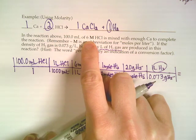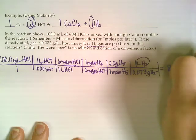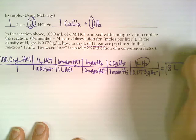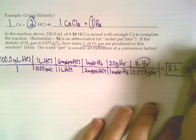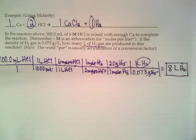Because that molarity that it gave us was kind of crummy, only had one sig fig. So when you type this through on your calculator, we only get to keep one sig fig. So our answer would be 8 liters of hydrogen.